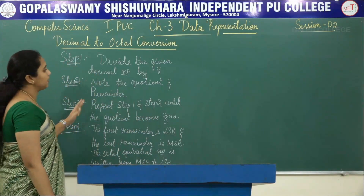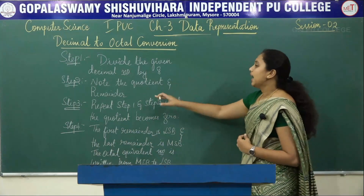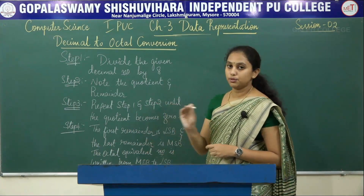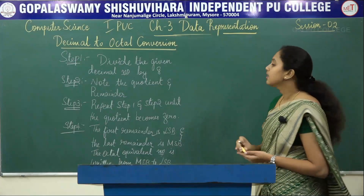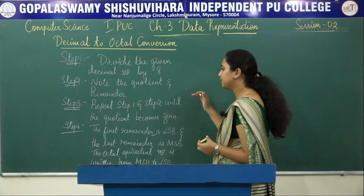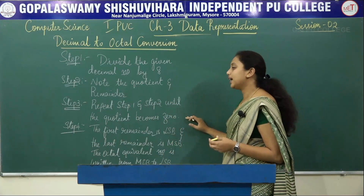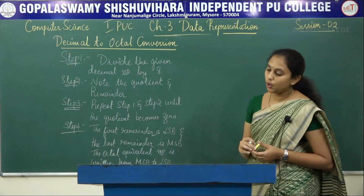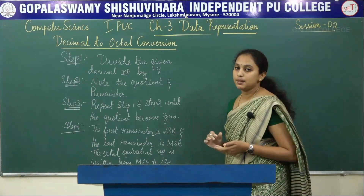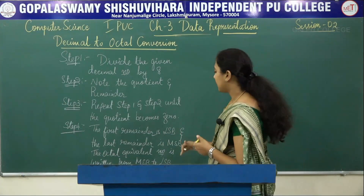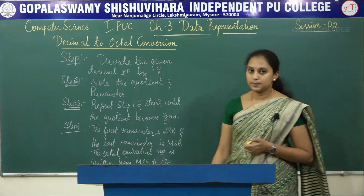To summarize: the first step is to divide the given decimal number by 8. The second step is to note the quotient and remainder. The third step is to continue until the quotient becomes 0. In the fourth step, mark the LSB and MSB — when writing the octal equivalent, write from MSB to LSB.